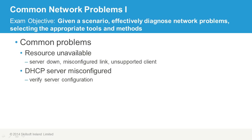A misconfigured DHCP server might be assigning incorrect address configurations to clients, or assigning them to the wrong scope. You just need to verify the configuration of the server — does it have the correct address information? It could be something as simple as a typo, but a single typo could affect a large number of clients. So this is always something you need to verify the configuration for.